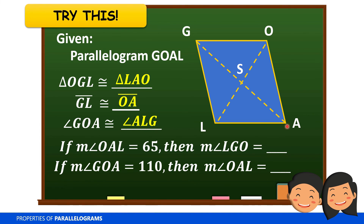Angle GOA is congruent to angle ALG because they are opposite angles. If the measurement of angle OAL is 65, then the measurement of angle LGO is also 65, since they are opposite angles. If the measurement of angle GOA is 110, then angle OAL is 70, because they are supplementary angles — so we subtract 110 from 180 to get 70.